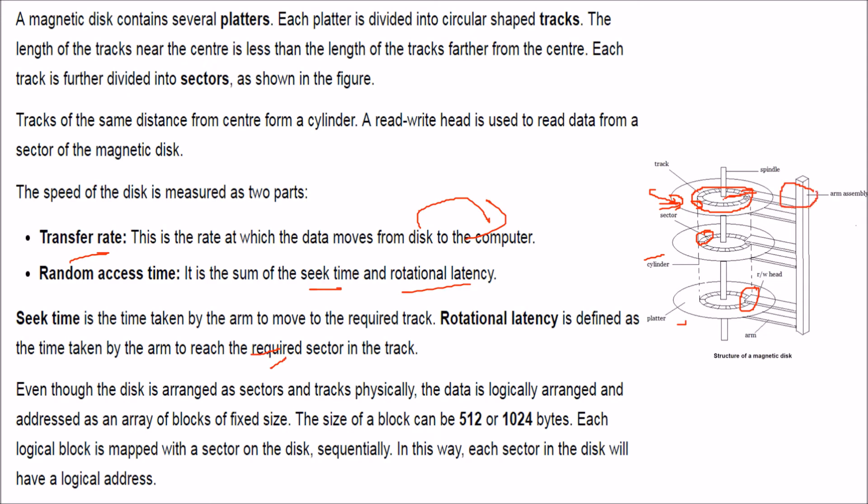So what is the seek time? This seek time is the time taken by the arm to move to the required track. First of all it has to come to track. Then rotational latency is defined as the time taken by this arm to reach required sector. So going to a particular track or finding a track is seek time, and then finding a particular sector where data is, is the rotational latency.